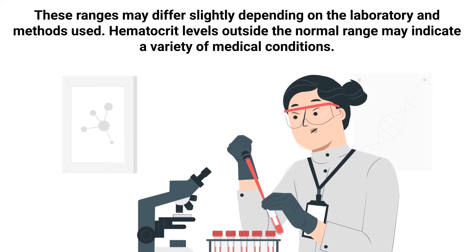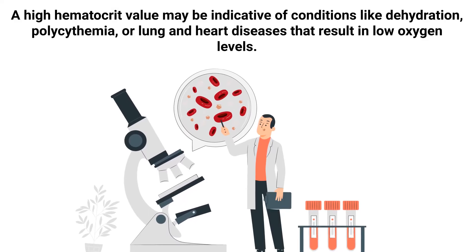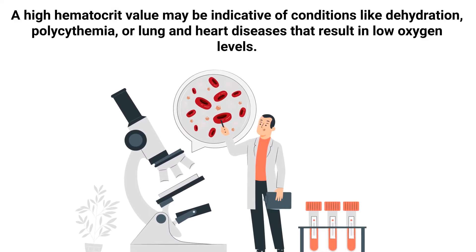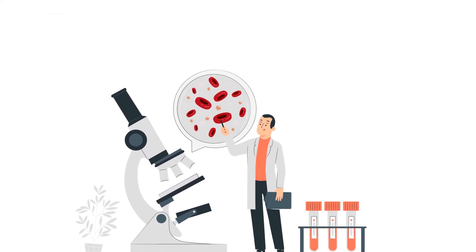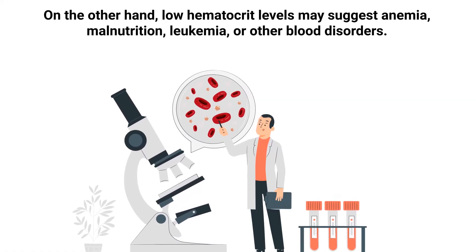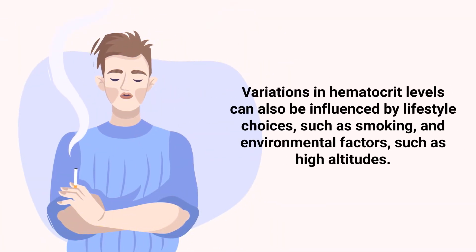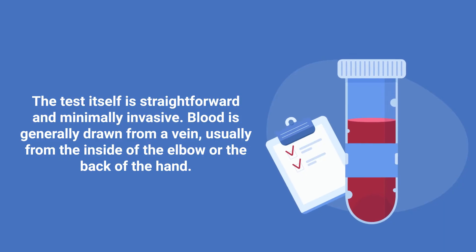Hematocrit levels outside the normal range may indicate a variety of medical conditions. A high hematocrit value may be indicative of conditions like dehydration, polycythemia, or lung and heart diseases that result in low oxygen levels. On the other hand, low hematocrit levels may suggest anemia, malnutrition, leukemia, or other blood disorders. Variations in hematocrit levels can also be influenced by lifestyle choices such as smoking and environmental factors such as high altitudes.